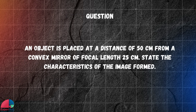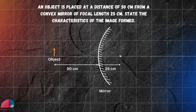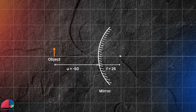Let's come back to our question to see how this works in practice. Imagine we place an object 50 cm away from a convex mirror with a focal length of 25 cm. We want to find the characteristics of the image formed. As we discussed earlier, we always put the object on the left-hand side and take its distance from the mirror as negative, so here U is negative 50. Since the focal point is on the right-hand side, F equals positive 25.